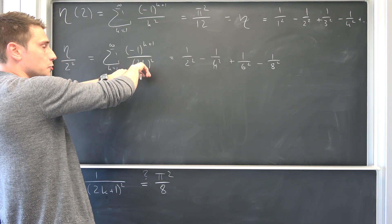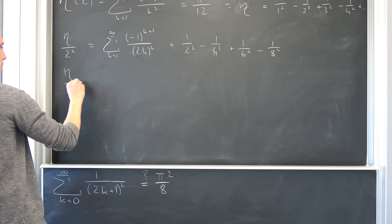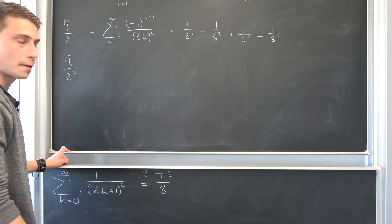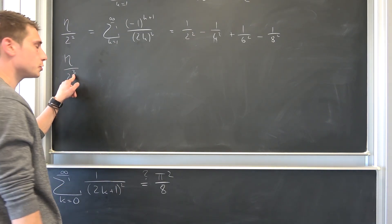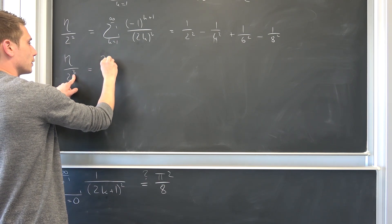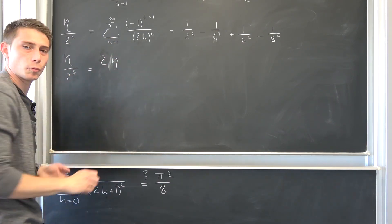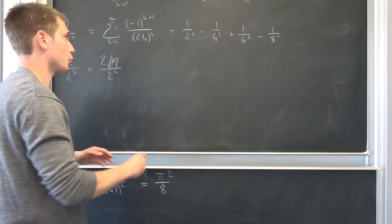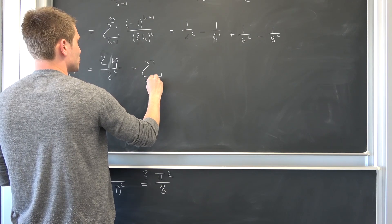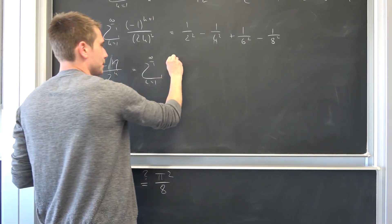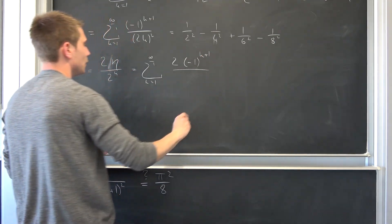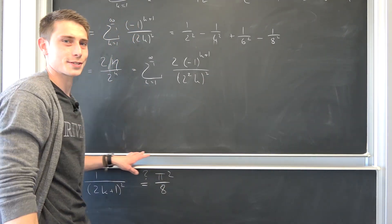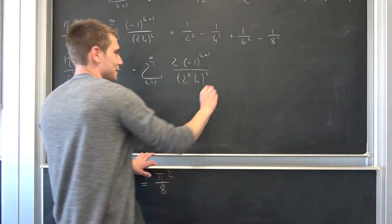We want 2 squared down here. This is going to give us eta over, and I'm going to put it differently, 2 to the 3rd power right here. 2 to the 3rd power or 1 over 2 to the 3rd power is nothing but 2 over 2 to the 4th power. 2 times eta. 2 over 2 to the 4th power, 2 to the 4th power is nothing but 2 squared squared, giving us a sum running from k equals 1 to infinity. Now we have a 2 up here, 2 times negative 1 to the k plus 1 power over 2 squared times k squared. Maybe you can already see where this is going. It's quite brilliant. Actually, it's pretty cool.